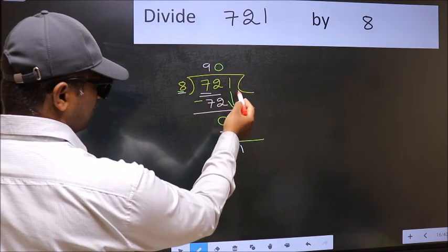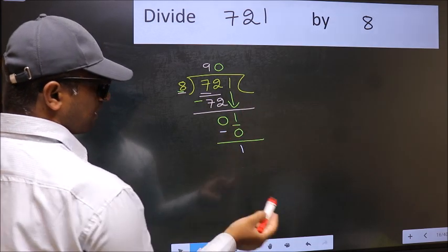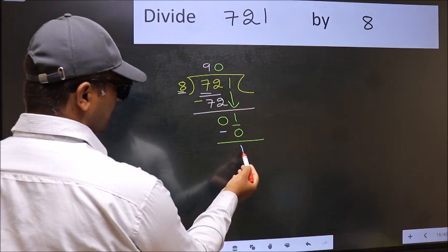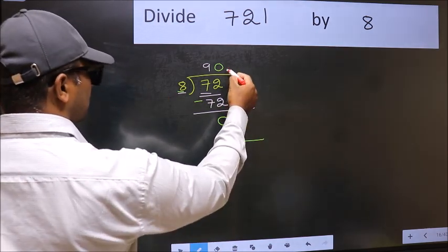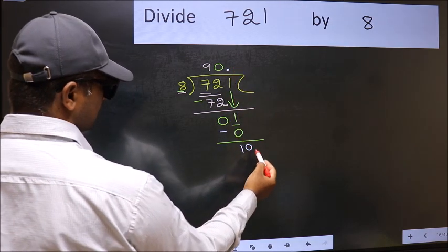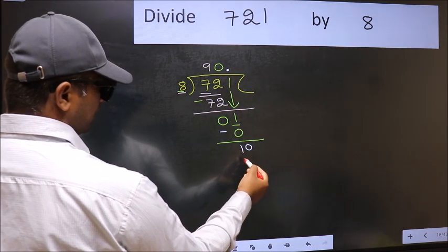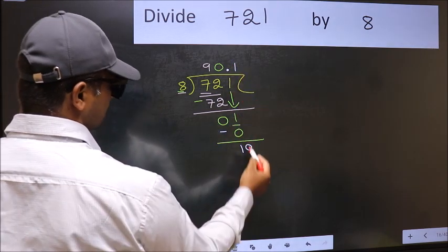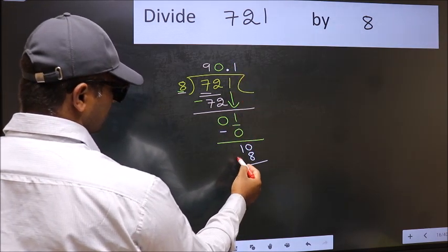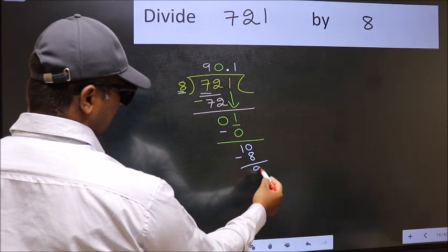Over here, we did not bring any number down. 1 minus 0. And 1 is smaller than 8. So now you can put dot and take 0. So 10. A number close to 10 in 8 table is 8 once 8. Now you should subtract. We get 2.